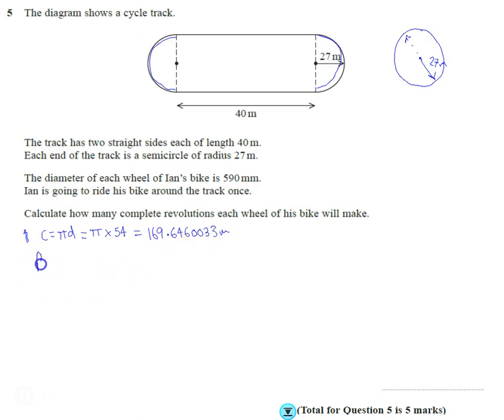So therefore, the perimeter of the track is going to be this answer plus the two straights, which are 80 metres each, which comes out as 249.6460033 metres. And you notice how I've not rounded my answers yet.